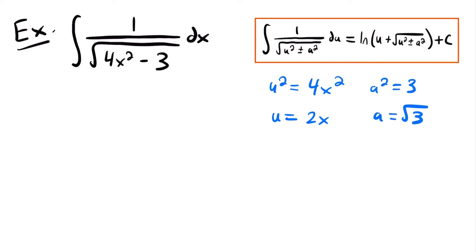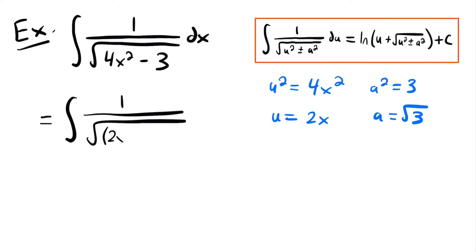And so then we can rewrite this integral to better represent the structure of the function in this integration rule by explicitly writing out what u squared and a squared are, now that we know the values of u and a. And so we'll have that this is equal to the integral of 1 divided by the square root of (2x) squared minus (√3) squared. So now we can explicitly see what u squared and a squared are and compare them to the function in our integration rule. Now that we can see that they match up, we can start going through the u substitution process.